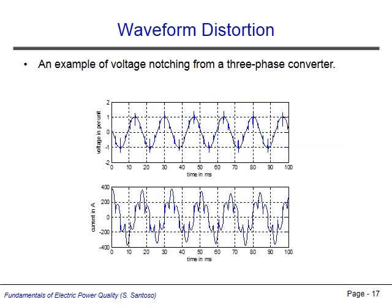This figure shows an example of voltage notching caused by a three-phase converter. As can be seen, brief fluctuations in voltage occur at regular intervals, six times per cycle. Each notch corresponds with the switching operation of the three-phase power converter.